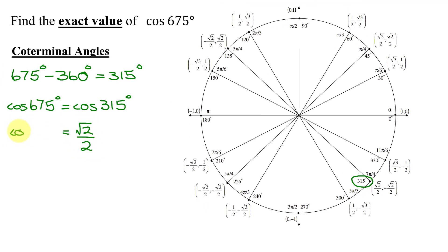So the exact value of the cosine of 675 degrees equals the square root of 2 divided by 2.